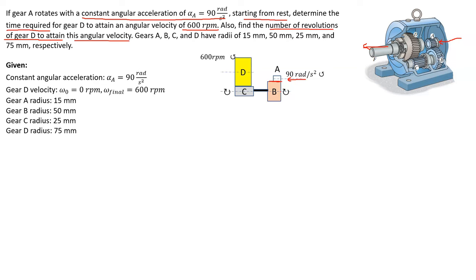We have an equation for the tangential relationship. Gears B and C have a common shaft, or common center of rotation, meaning whatever the angular velocity of B is will be the same angular velocity of C — their tangential velocities differ based on radii. Then gears C and D, much like A and B, have a common tangential velocity, but their angular velocities are proportional to their two radii. That's the whole concept of velocity ratios.